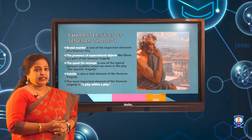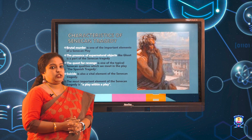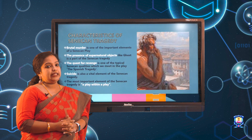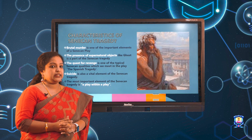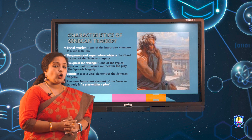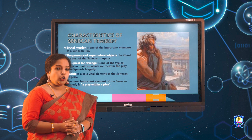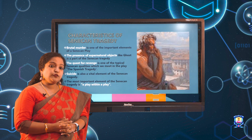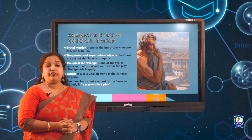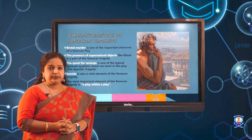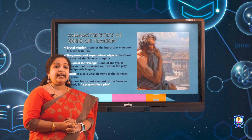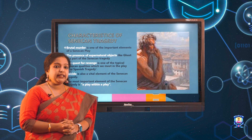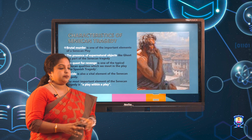Now let us move on to the characteristics of Senecan tragedy. Brutal murder is one of the important elements. The presence of supernatural objects is a common thing. The quest for revenge and suicide are very important aspects, and a technique called play within a play is usually applied to Senecan tragedy.